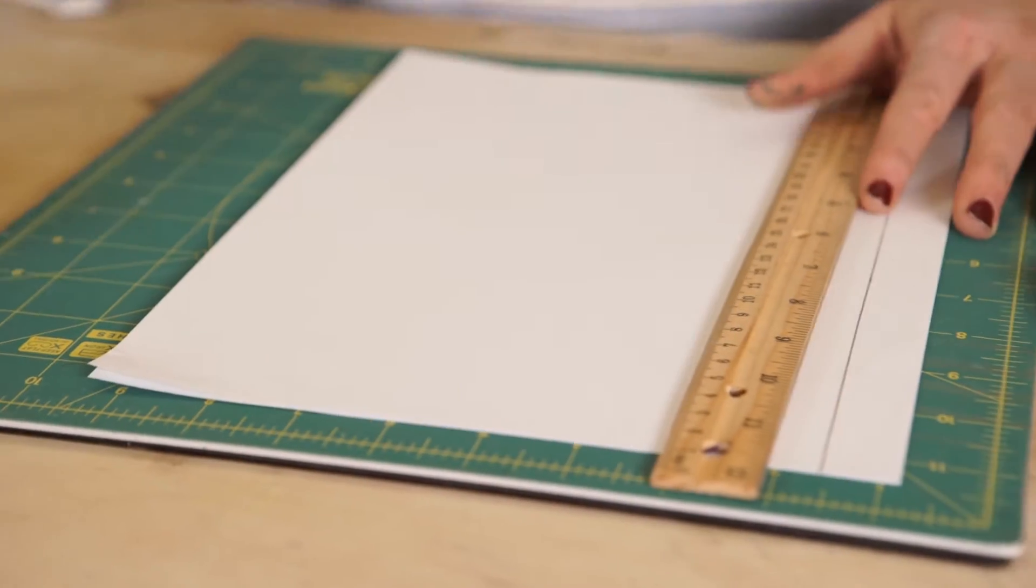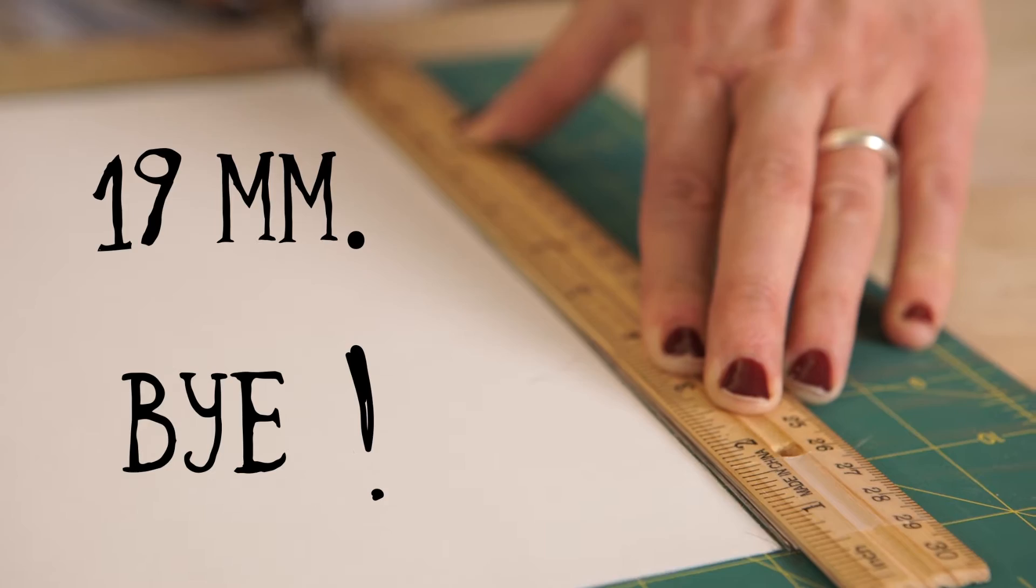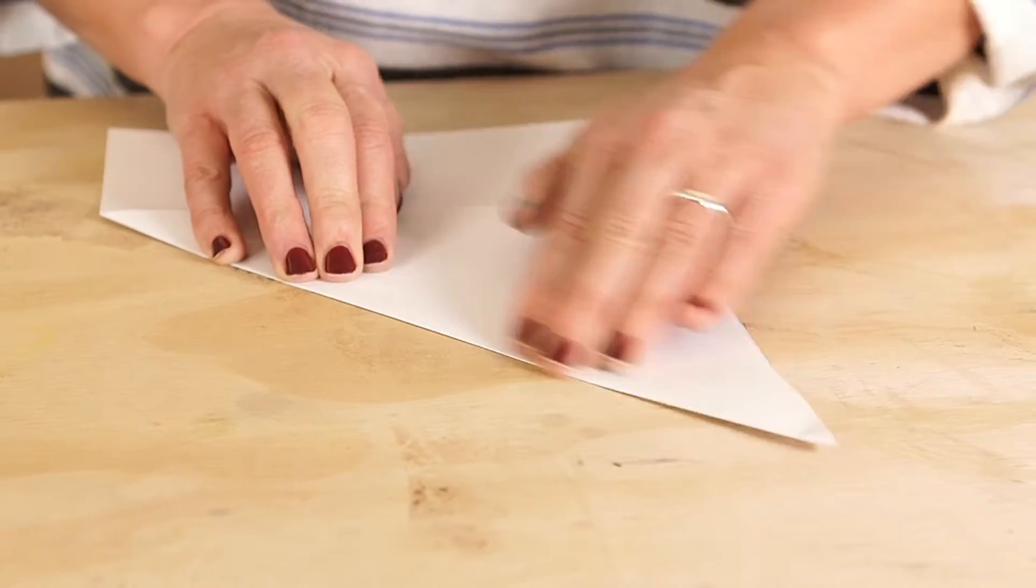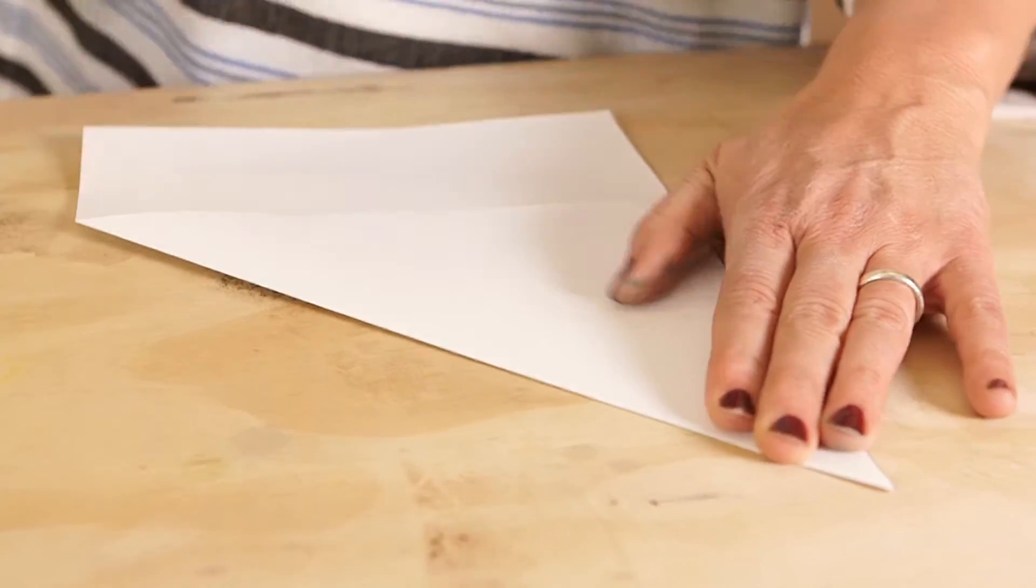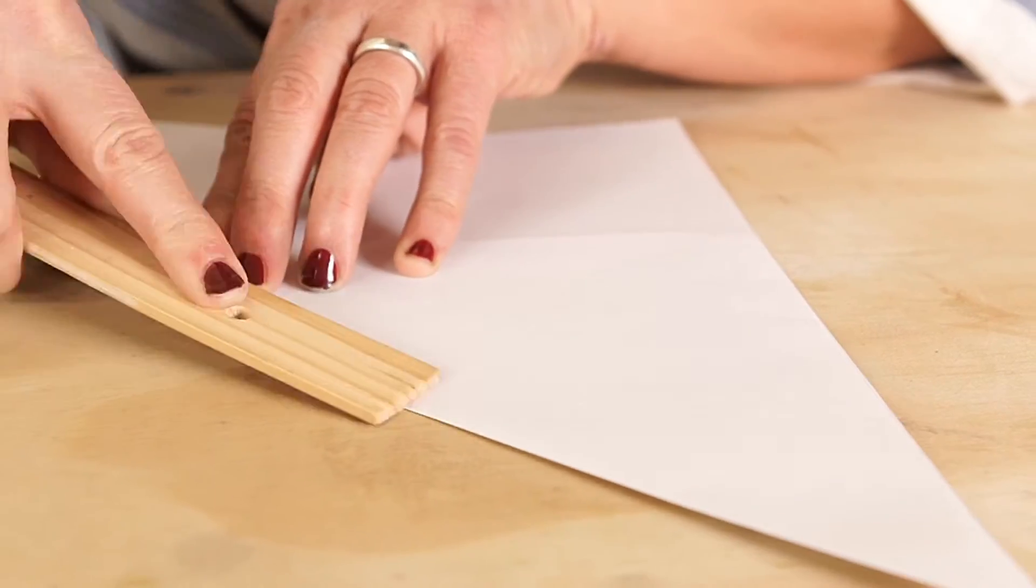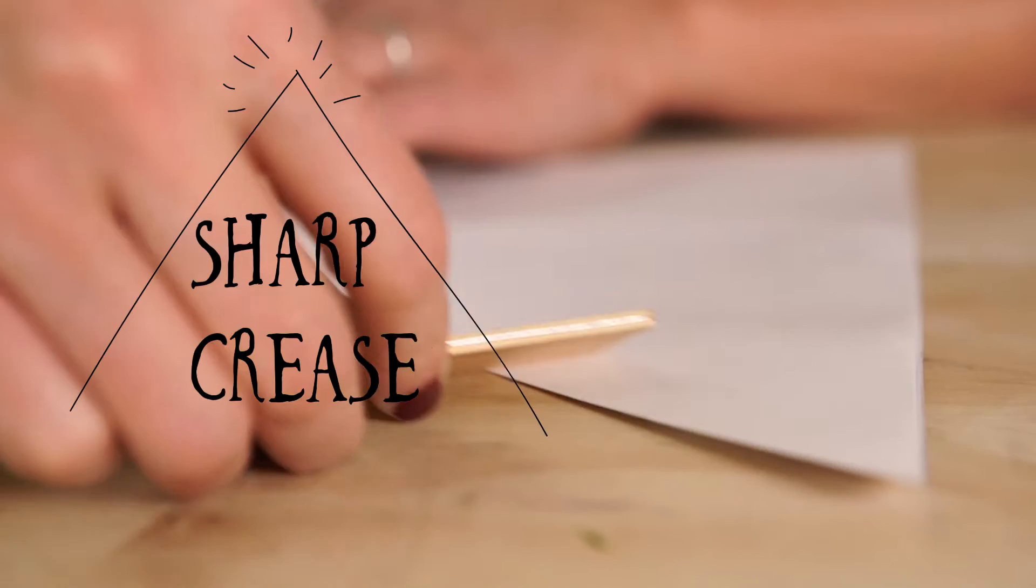A regular size paper is not gonna work, so you're gonna wanna take 19 millimeters off of the paper. The first one, take this and fold it all the way over, and something that's really important to keep in mind is every time you fold, you're gonna wanna make sure that that crease is really sharp, very precise.